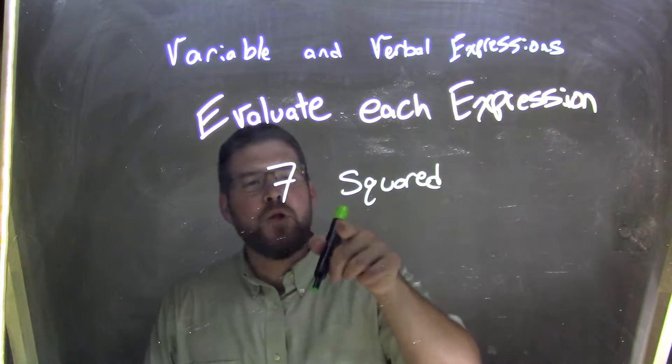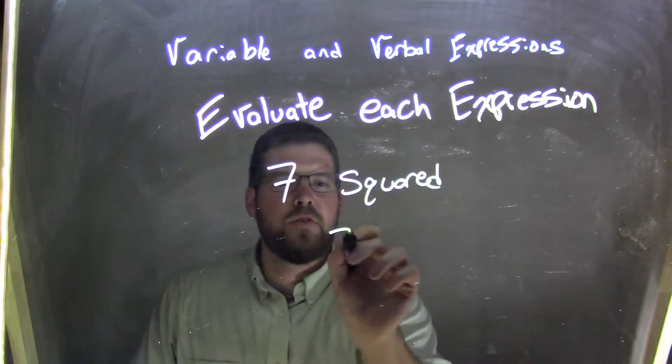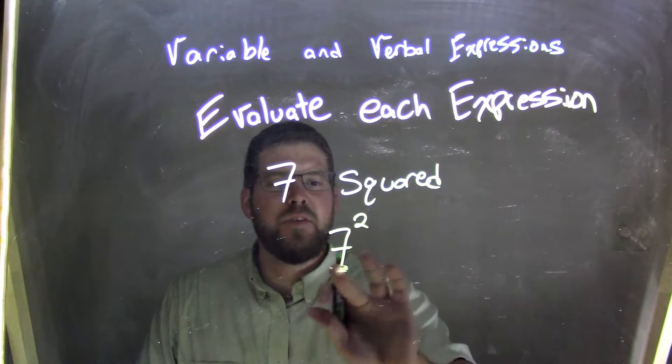So 7 squared, I'm going to look at that, thinking squared. 7 squared, squared, that's a 2 in the exponent, so 7 is my base, 2 is in the exponent.